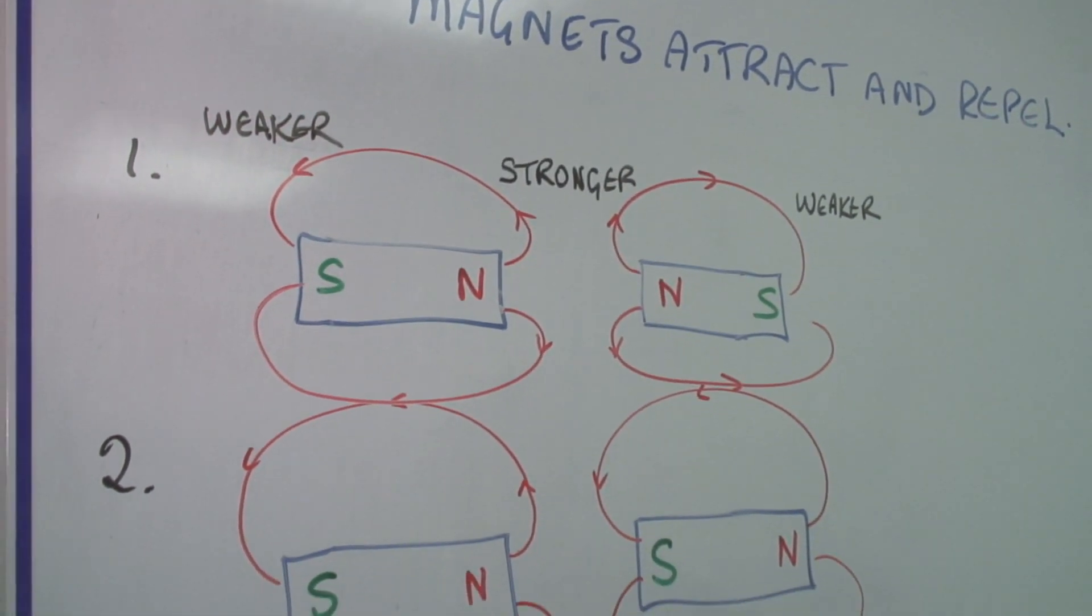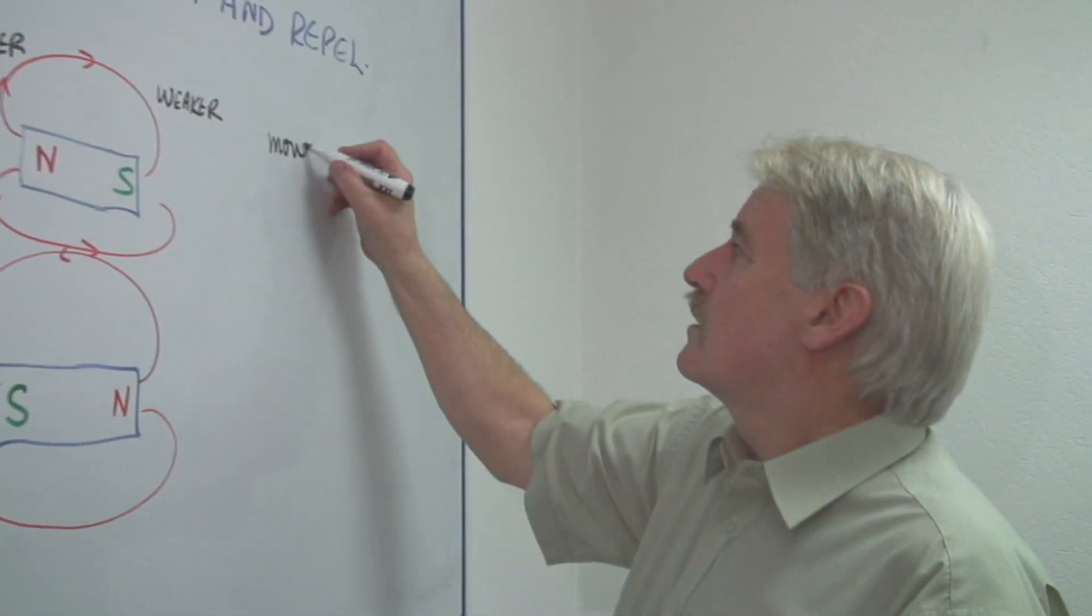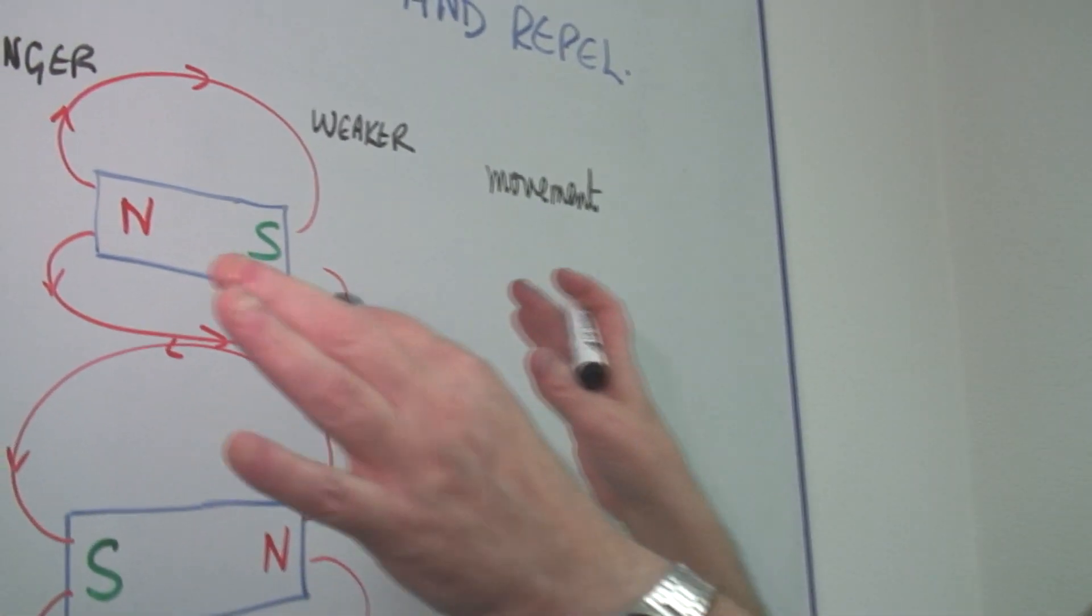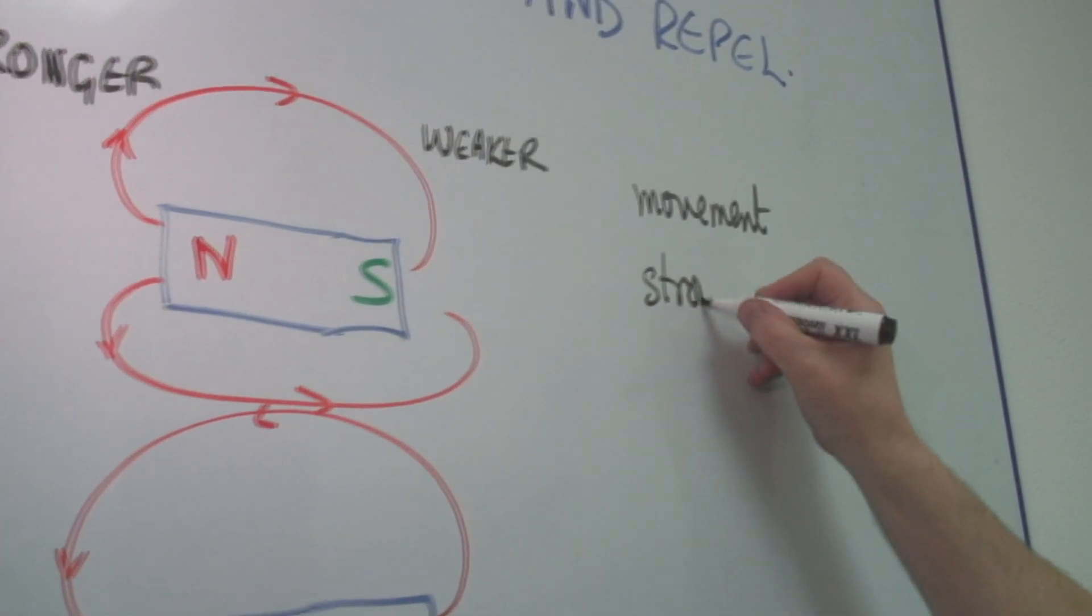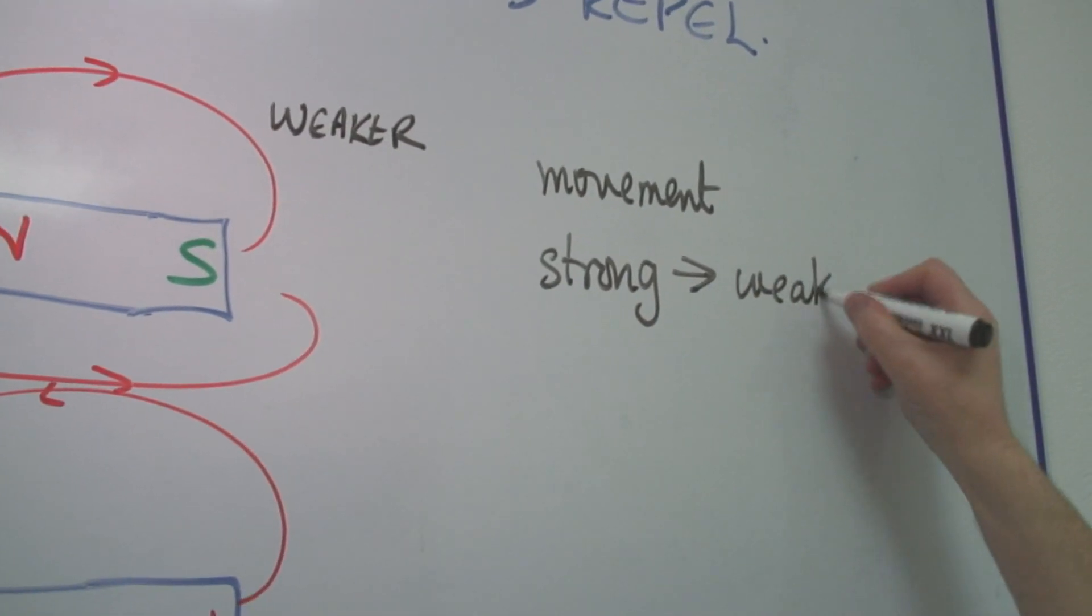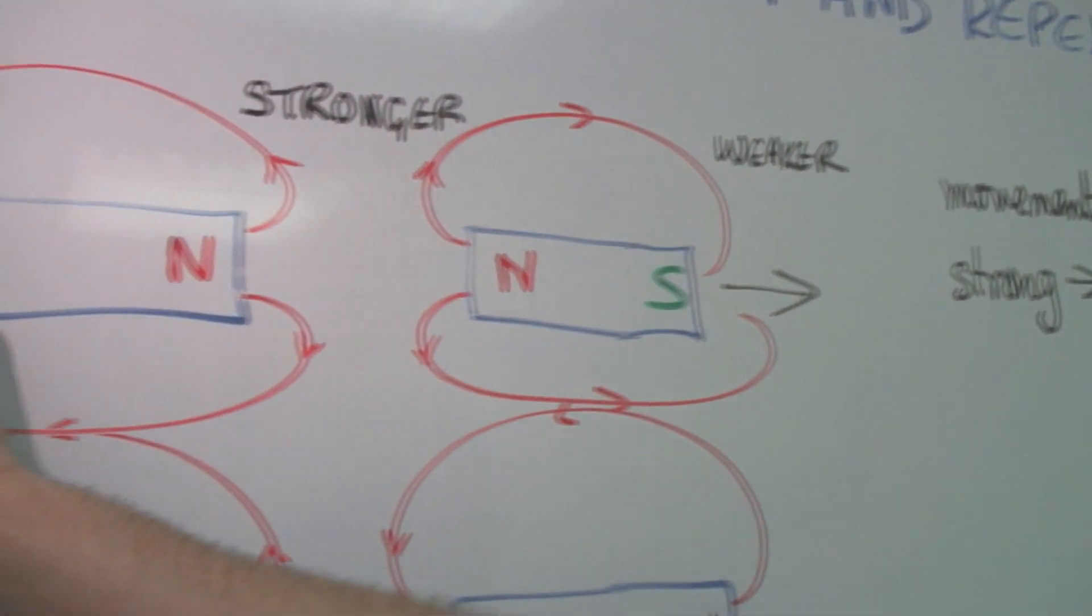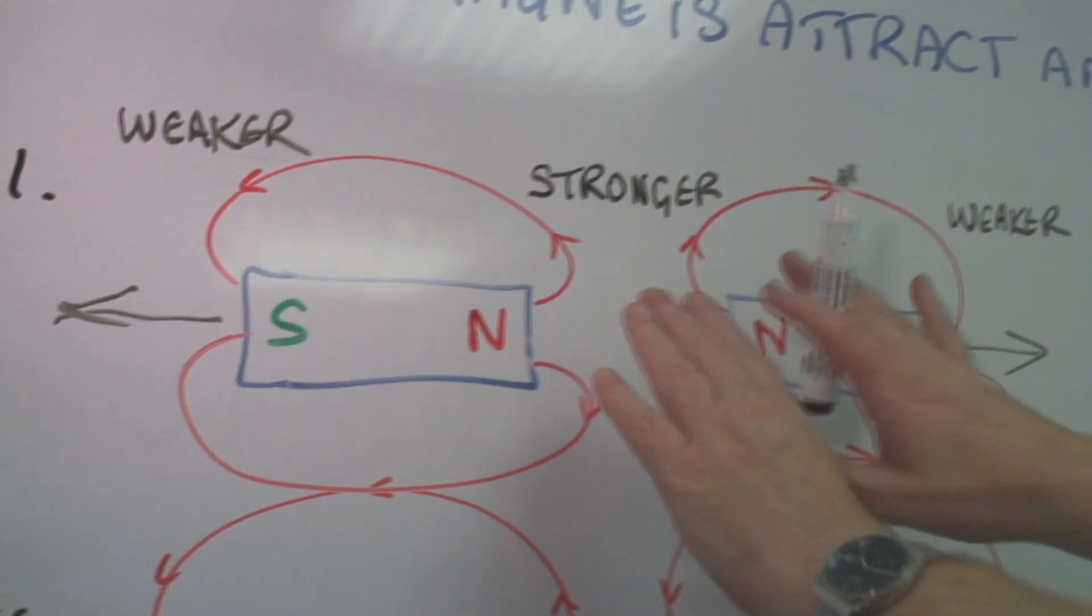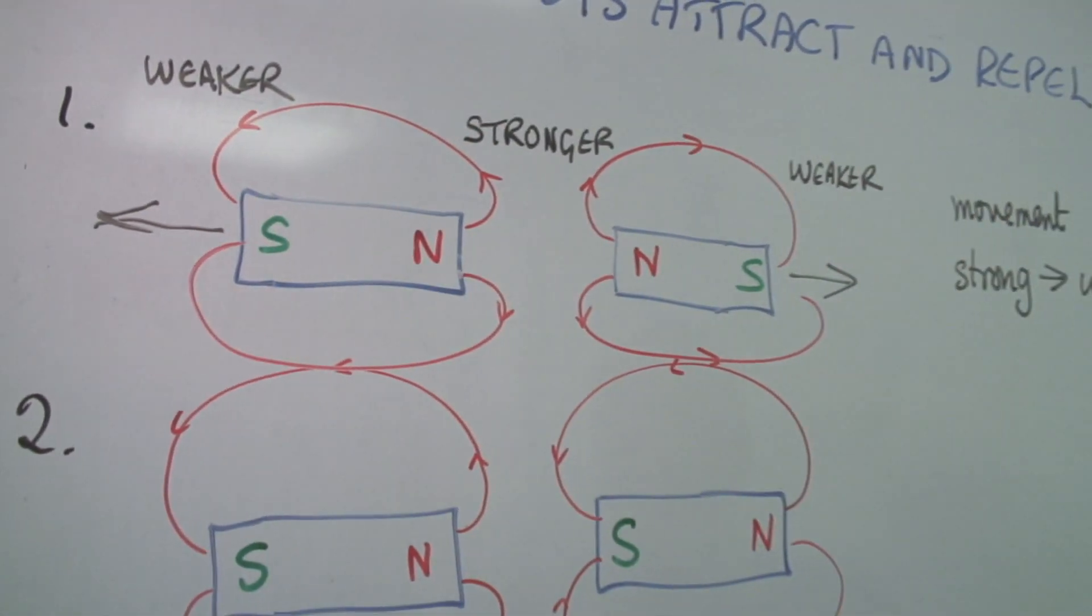And there is a rule that there will always be movement to reduce the field so that it is even. And it will always go from the direction strong to weak. And essentially, these two magnets will move outwards, they will repel, because that's the only way you can make this field in the centre weaker, to match the field at the outsides.